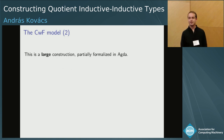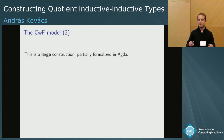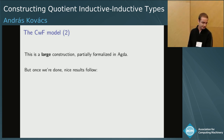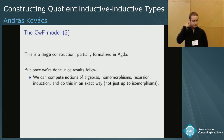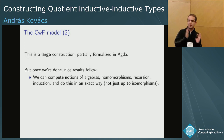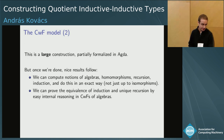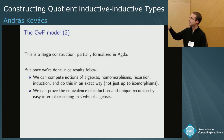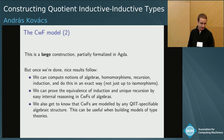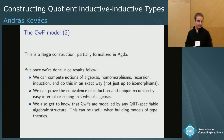This is partially formalized in Agda, but the entire construction is not fully formalizable in Agda — both for performance reasons and reasons of human feasibility. But once we are done, very nice results follow. We can compute the notions of algebraic homomorphisms, recursion, and induction in a completely exact way, not just up to isomorphisms. We can actually write a computer program that takes a signature as input and prints out all the beta rules and induction principles for that signature. We can also prove the equivalence of induction and unique recursion by easy internal reasoning in the CWFs, and we learn that CWFs are modeled by any QIIT-specifiable algebraic structure, which is useful in building models of type theories.